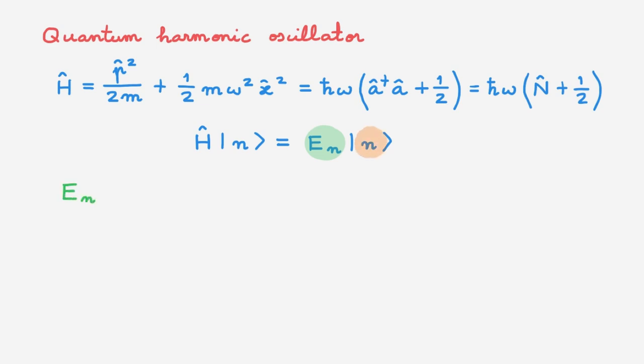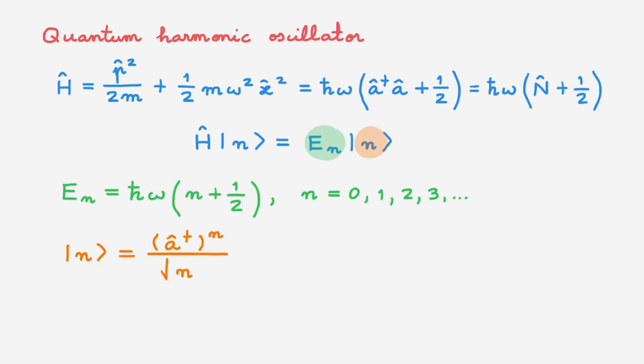The eigenvalues E_n are quantized and equal to ℏω times n plus one-half, where n must be a non-negative integer. The associated eigenstate |n⟩ can be constructed by acting n times with the raising operator on the ground state.